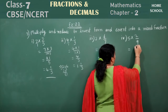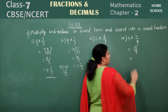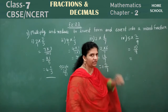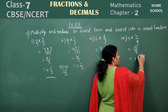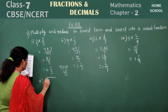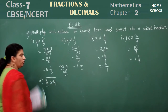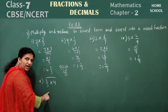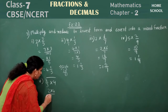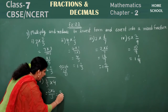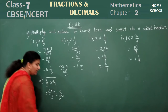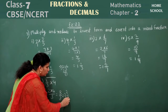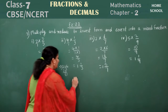Fourth problem: 5 into 2 by 9. That gives 10 by 9. Converting: 9 ones are 9, remainder 1. Answer: 1 and 1 by 9. Fifth problem: 2 by 3 into 4. That is 2 into 4 by 3, which is 8 by 3. Converting: 3 twos are 6, 8 minus 6 is 2. Answer: 2 and 2 by 3.